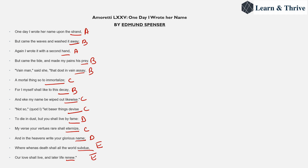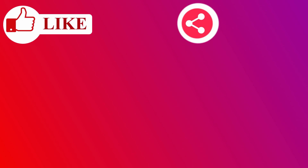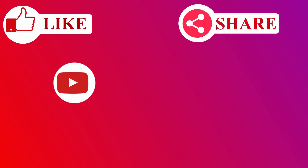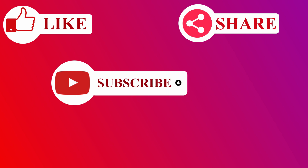That is all for this video. I wanted to tell you about Elizabethan sonnets — Petrarchan, Shakespearean, and Spenserian — which were very prominently written and very famous around that time. I hope you understood all three. If you liked my video, please like it, share it with your friends, subscribe to my channel, and don't forget to hit the bell icon. I'll see you soon with my next video — till then, much love, thanks for watching.